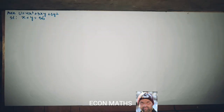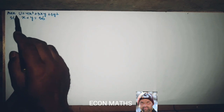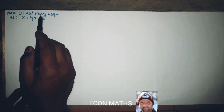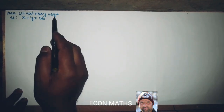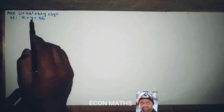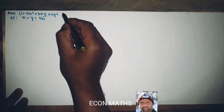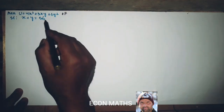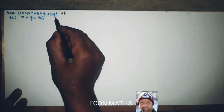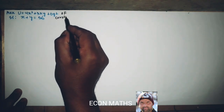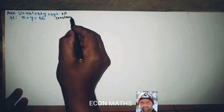Hi, this is Halal. In this video we will use the Lagrange multiplier in solving the constrained optimization problem. The question is: maximize u equals 4x squared plus 3xy plus 6y squared, subject to x plus y equals 56. This is called the objective function, and this is the constraint.